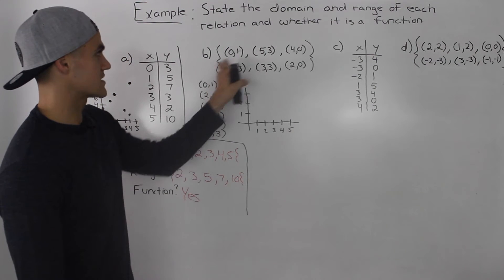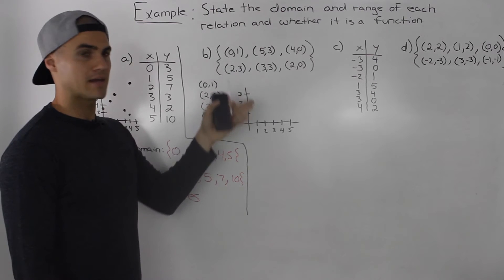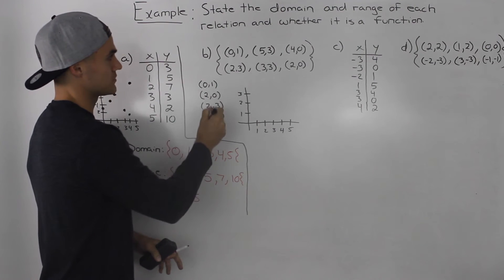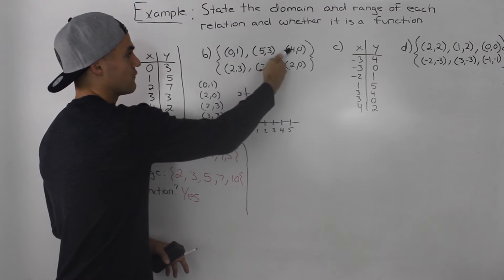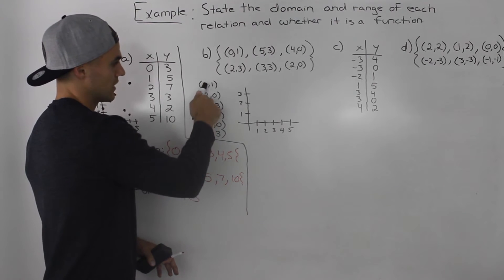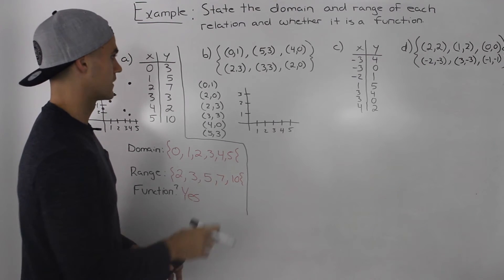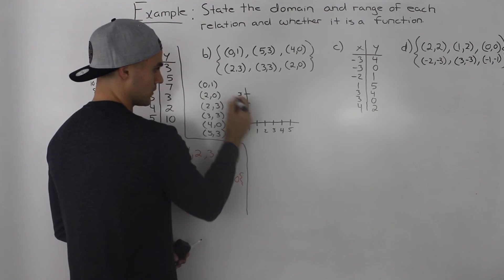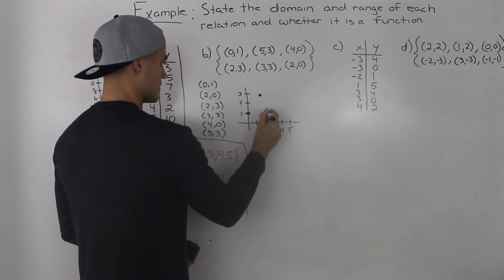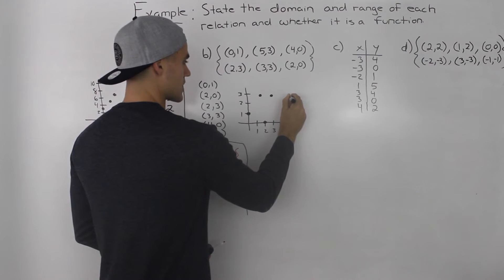Moving on to Part B, we have a list of coordinates and we have to find the domain, range, and whether it's a function. Whenever I get a list of coordinates they're often out of order, so I like to put them in order by x value. The x values were all over the place — 0, 5, 4, 2, 3, 2 — so I sorted them by x value. Then I plotted the points: (0,1), (2,0), (2,3), (3,3), (4,0), and (5,3).